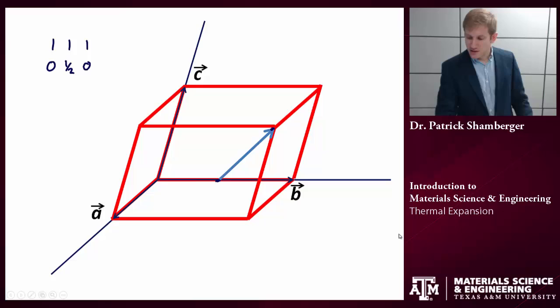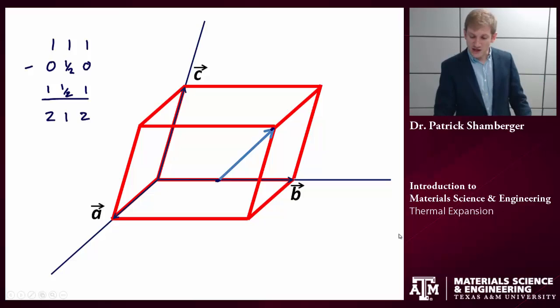So if I subtract the tail from the head, I get 1, 1 half, 1. Now the final thing I need to do is to write this in the typical vector direction notation. And so what I want to do is remove any fraction. So I'll multiply it through by 2. That gives me 2, 1, 2. And because this is a direction, I'm using square brackets to denote this.